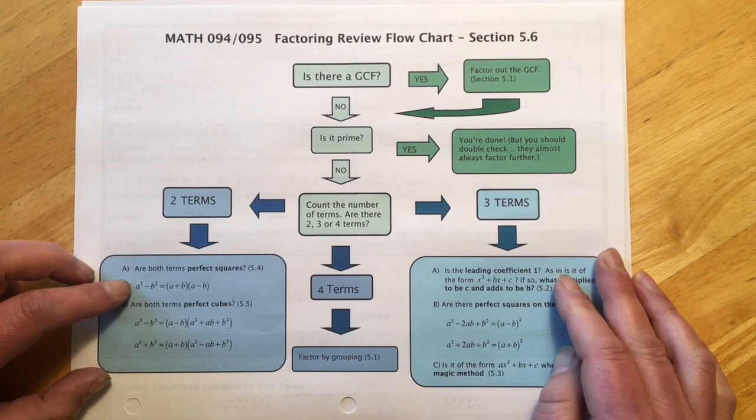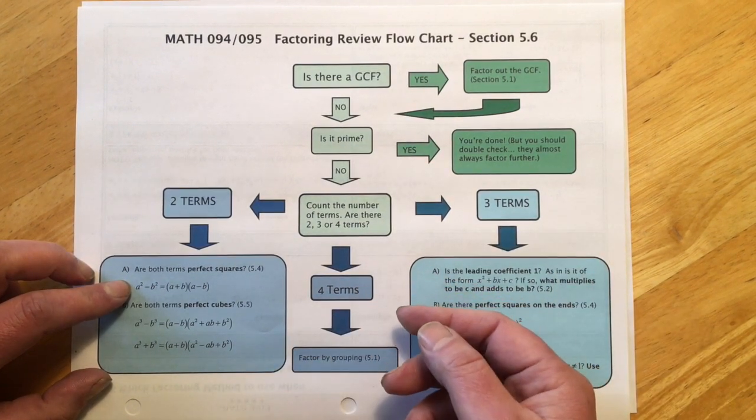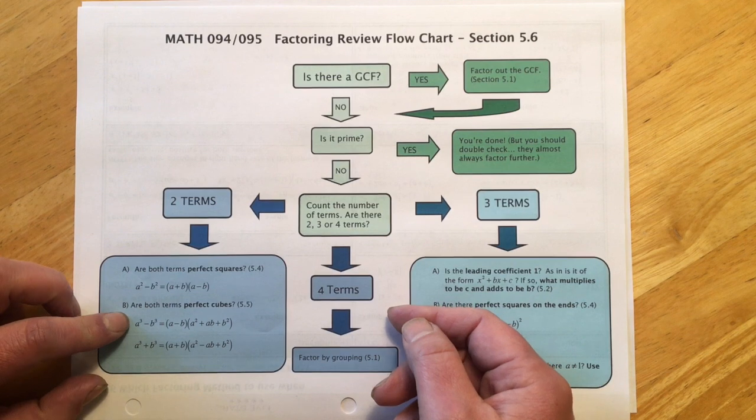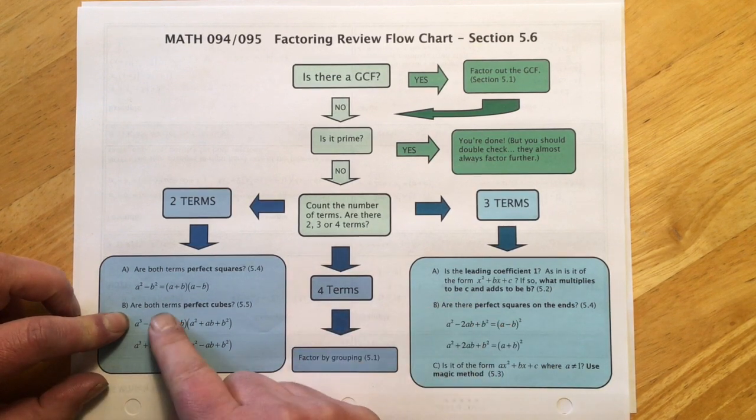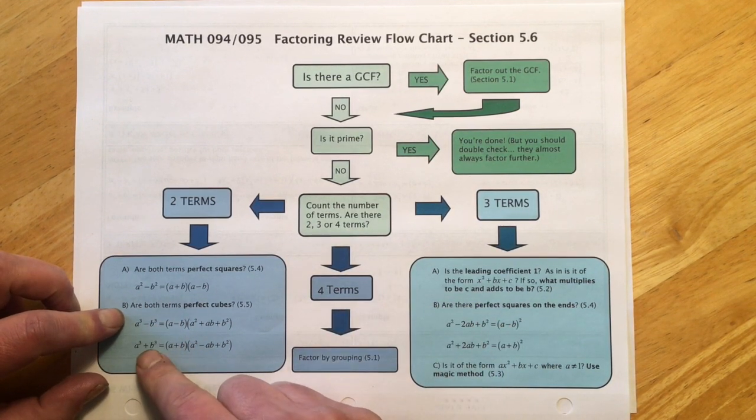But most of the time it's going to be squares on the ends or cubes on the ends. Squares on the ends we saw in 5.4. That's our a plus b, a minus b difference of squares. And then cubes on the ends, that's that cube formula we saw in 5.5. There's one with a minus, one with a plus.